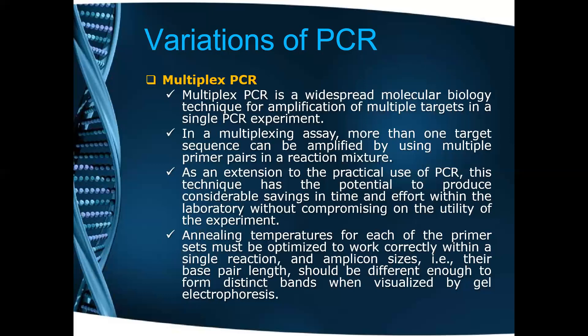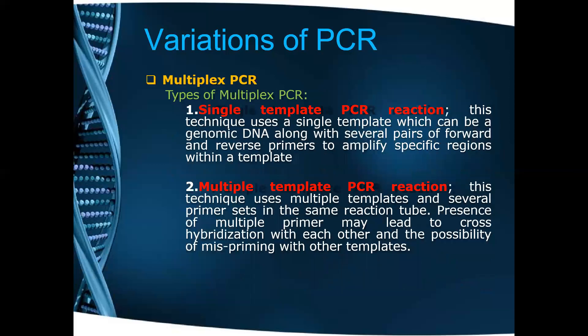The annealing temperature of each of the primers must be optimized to work correctly within a single reaction. The annealing temperature is the main controlling point where it has been changed so that all the individual annealing temperatures can go forward, and depending upon their temperature the things can get magnified. The result can be visualized by gel electrophoresis. Coming to the types of multiplex PCR: single-template and multiple-template. Single-template means there is only one template from which the primers are getting attached and amplification is going on. In multiple-template, the same reaction contains different initiation sites, which leads to the formation of different amplified DNA products. This is an overview of multiplex PCR.